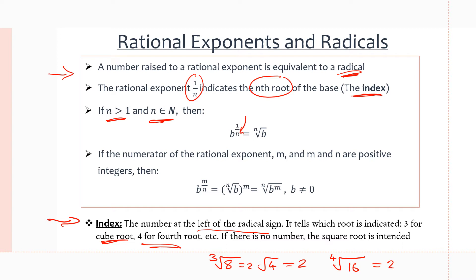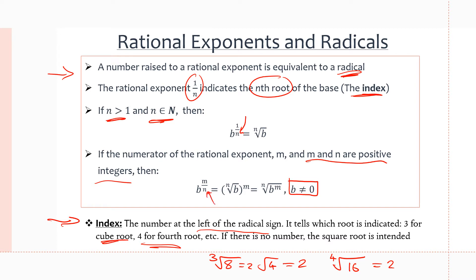If the rational exponent has a numerator that is not 1, but is a value of m, where m and n are both positive integers, then b to the power of m over n equals the nth root of b all to the power of m — which could also be written as taking the nth root of b to the power of m. There is a restriction that b cannot equal 0. All we want to remember is that the denominator of our rational exponent is our index, and the numerator is our exponent.